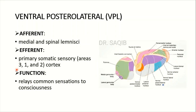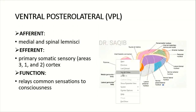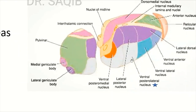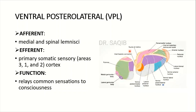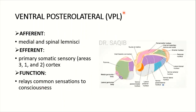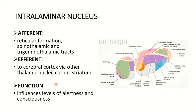The ventral posterolateral nucleus (VPL): afferents come from the medial and spinal lemnisci, and efferents go to the primary somatic sensory cortex, Brodmann areas 3, 1, and 2. Its function is also to relay common sensation to consciousness. Both VPM and VPL share this same function of relaying common sensations to consciousness.